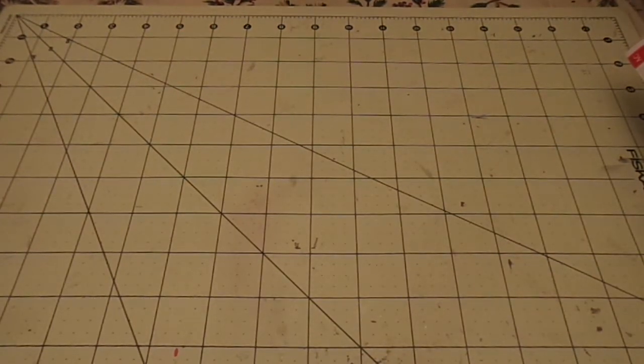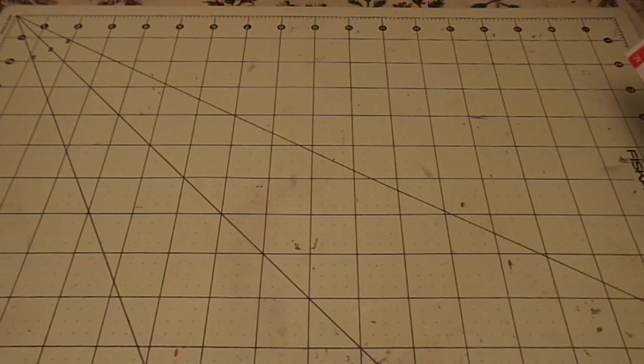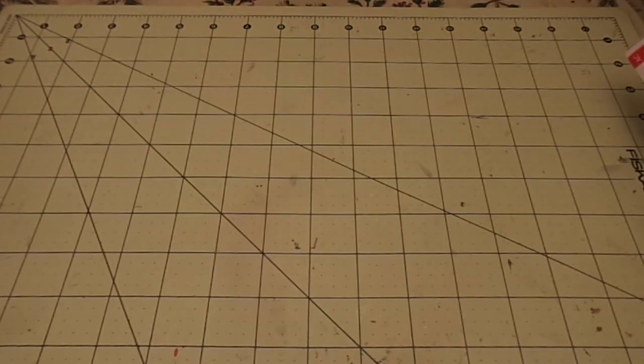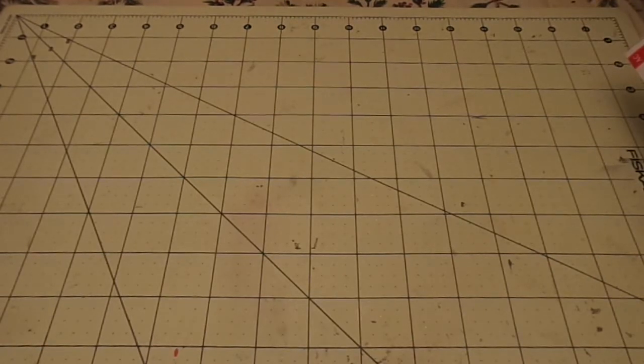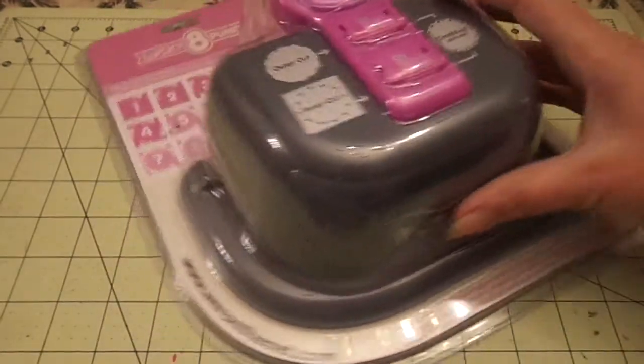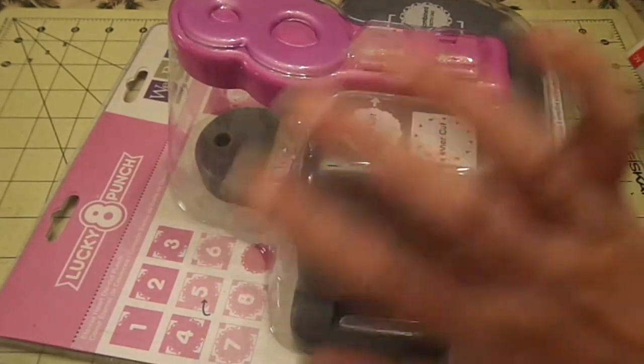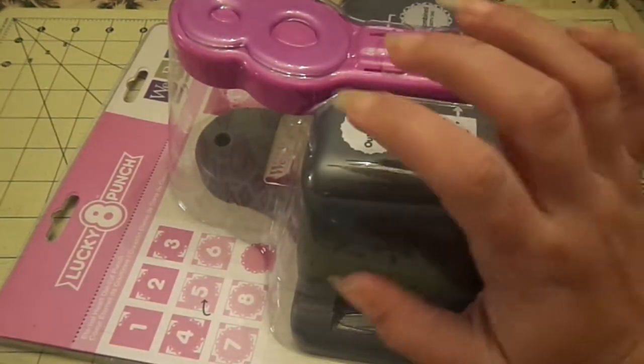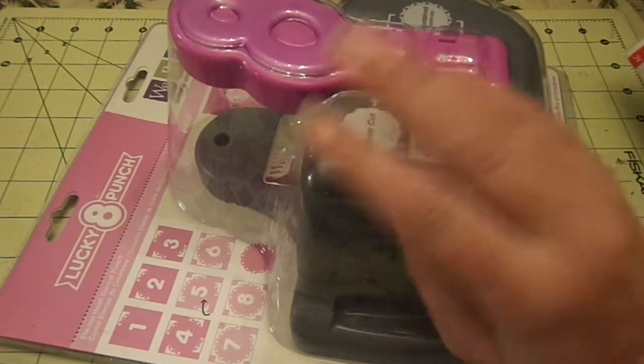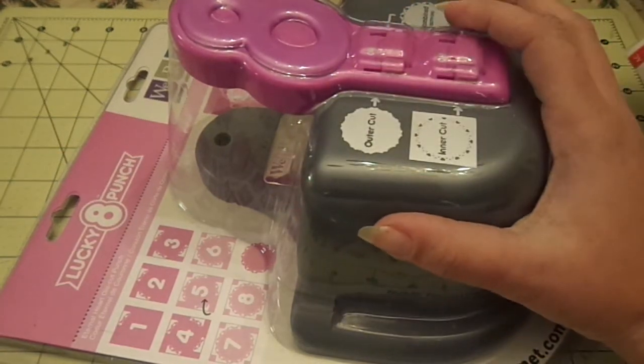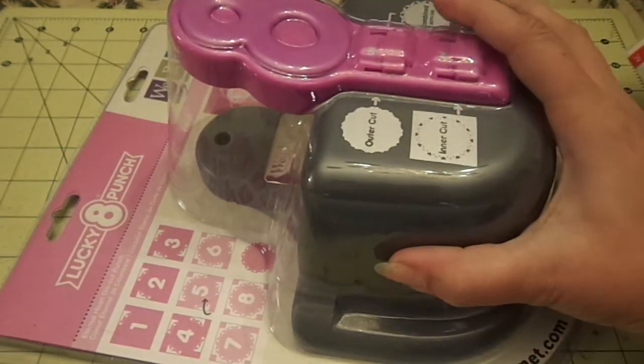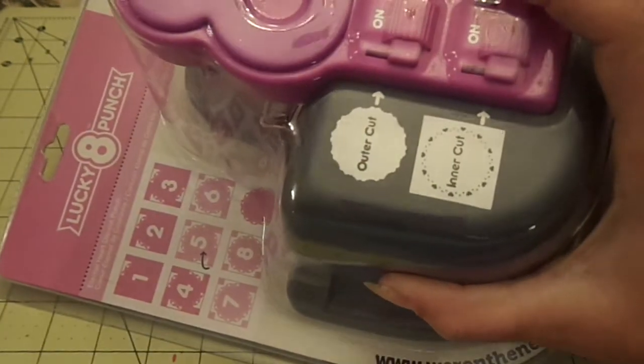So a lot of the stuff that I found, there was only one of, except for these. There was a ton of these of all different kinds, but I controlled myself and I only got two because they're going to be really hard to store. It's the ginormous Lucky 8 Punches and they have the different colors that go by what they cut out. They're $14.99.